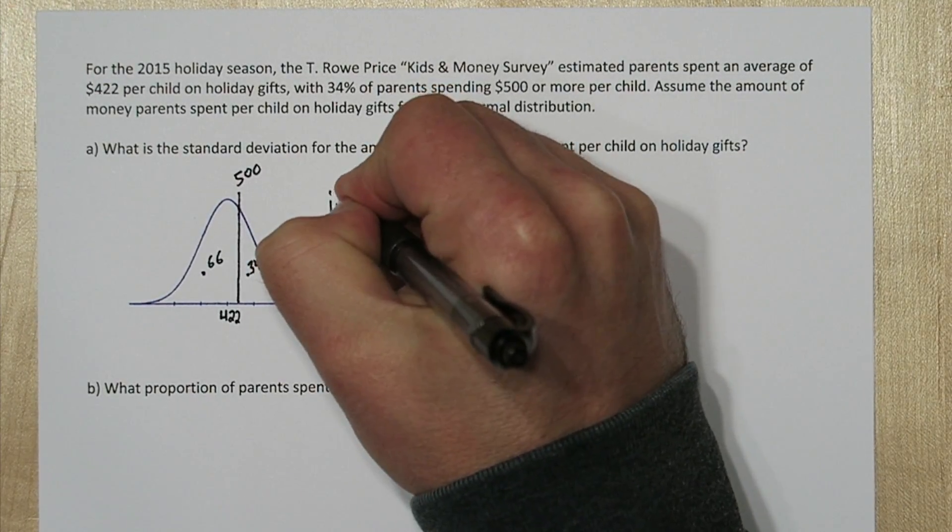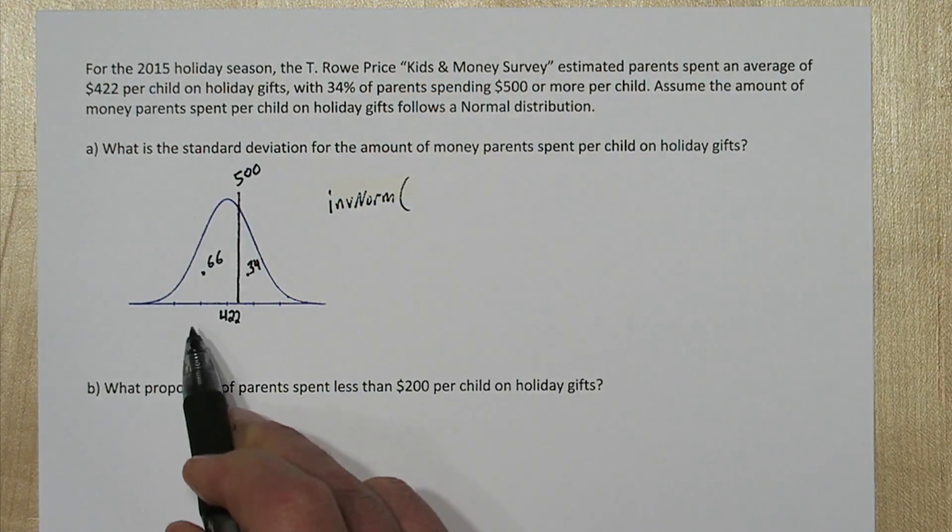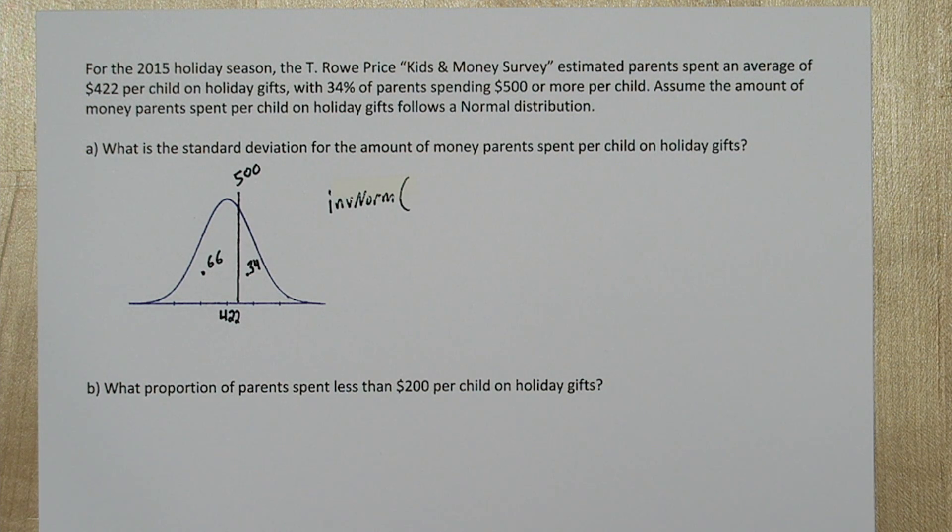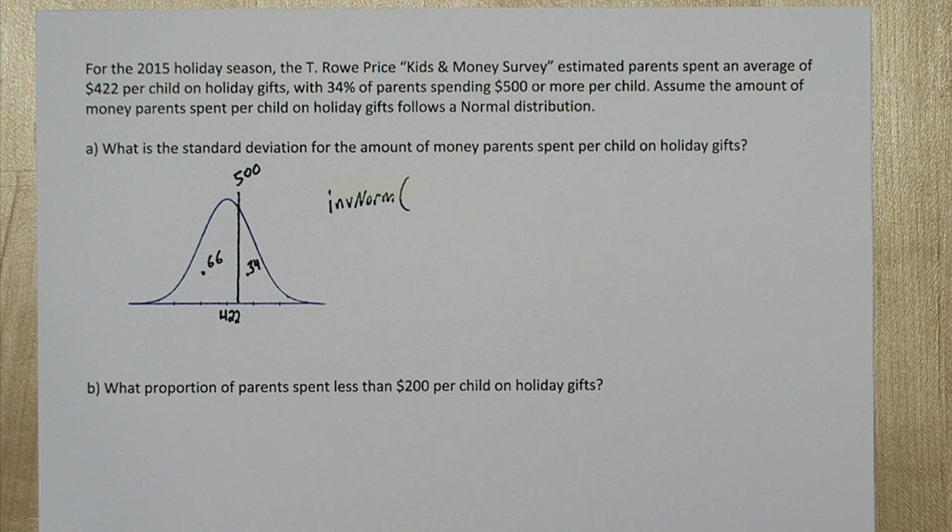And what we're going to do is we're going to use inverse norm on the calculator to figure out how many standard deviations are required in the standard normal distribution to cut off the lower 66% of the data.